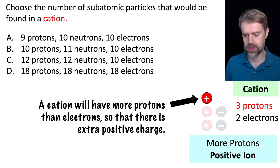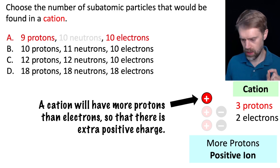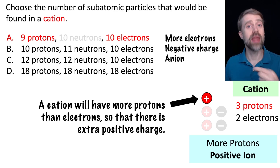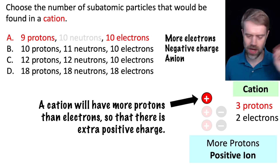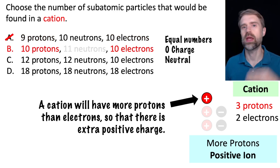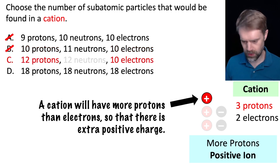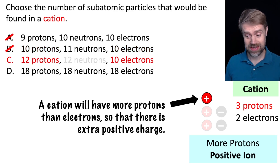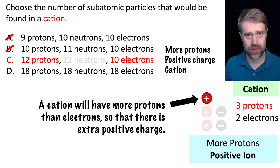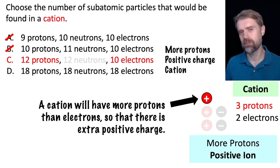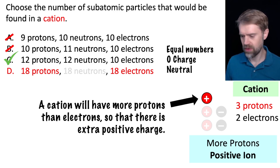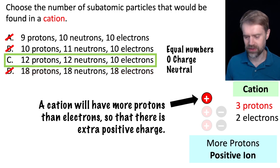Let's look through the answer choices at the number of protons and electrons. Choice A: 9 protons and 10 electrons — more electrons, so more negative charge, giving us a negative ion or anion. Cross it off. Choice B: 10 protons, 10 electrons — equal numbers, charges cancel out totally, leaving a neutral atom with zero charge. Not what we're looking for. Choice C: 12 protons, 10 electrons — that's more protons than electrons, so we have extra positive charge that won't get canceled out. That looks like a positive ion, a cation. Choice D: 18 protons, 18 electrons — equal number, zero charge, neutral. Not what we're looking for. So that means C is the answer.